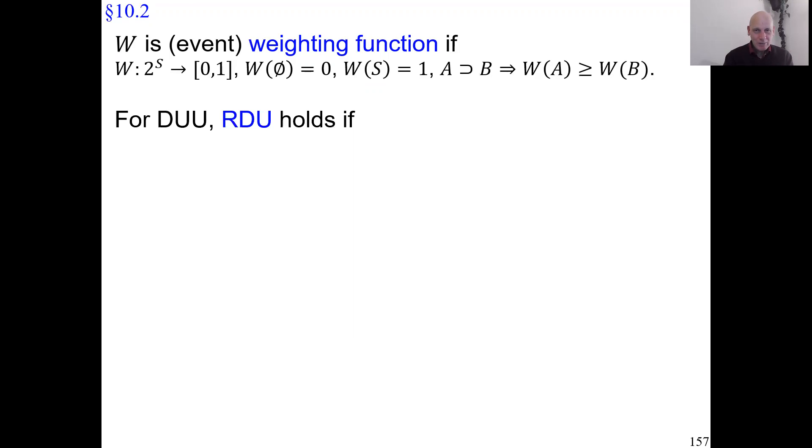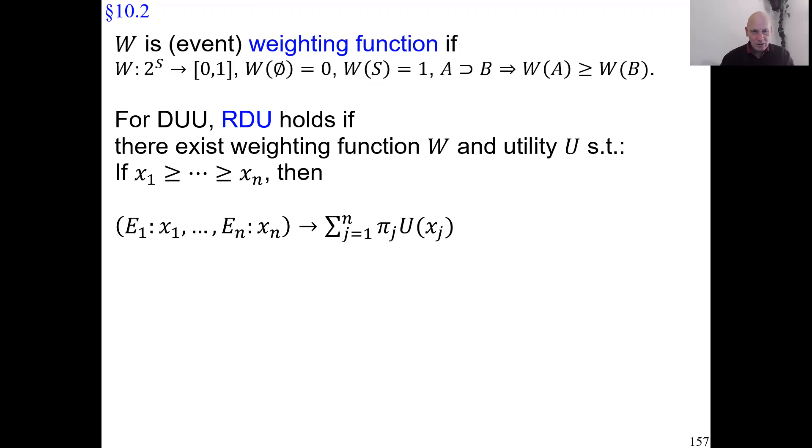Rank-dependent utility means that we assume there exists a weighting function capital W and a utility function capital U. I'm going to again assume a complete ranking of the outcomes. If I write here the general prospect, you see I assume the outcomes have been ranked. I can always renumber events to get that done. This is evaluated by such a function, representing preferences. It's again a convex combination of utilities. And what remains to be done is tell you what these decision weights π_j are.